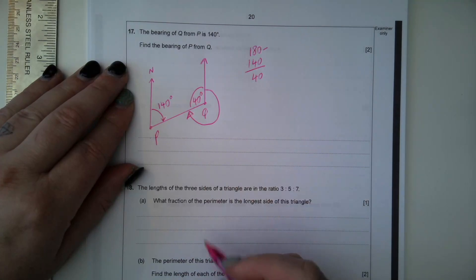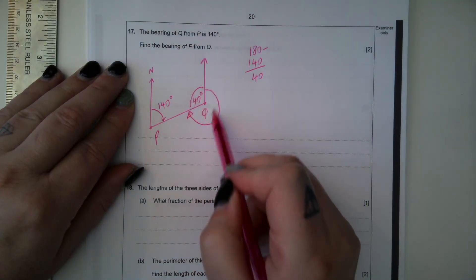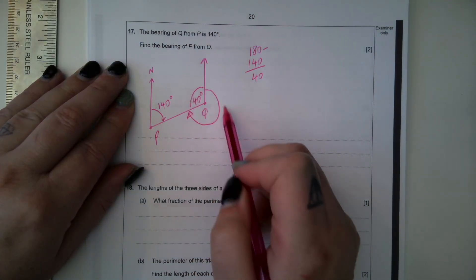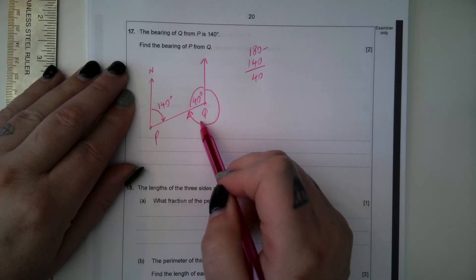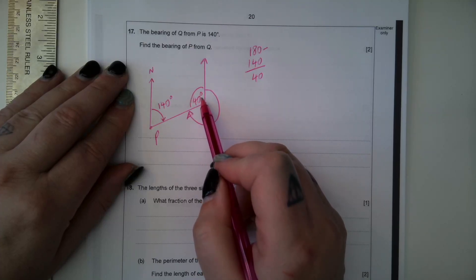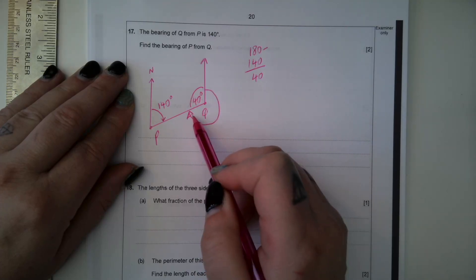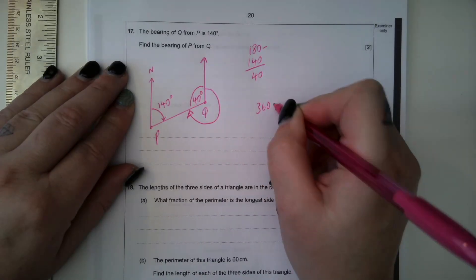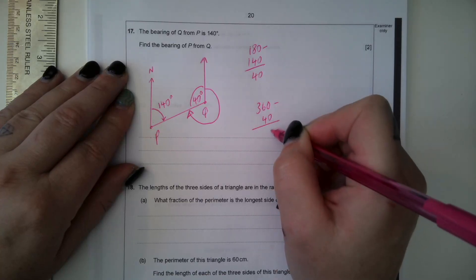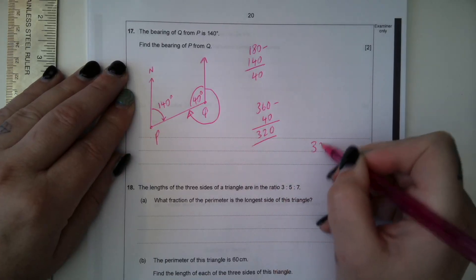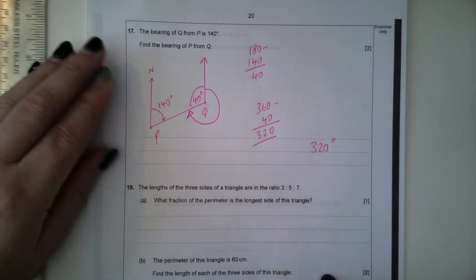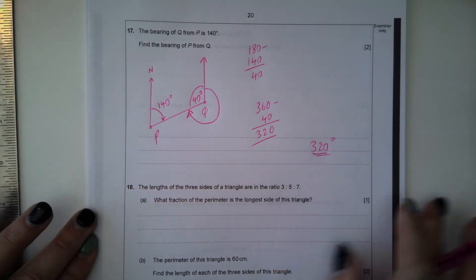Now this whole circle, angles around a point add up to 360, that's 40, so if we subtract that from 360, we can find the bearing of P from Q. So 360 subtract 40 is 320, so the bearing of P from Q is 320 degrees.